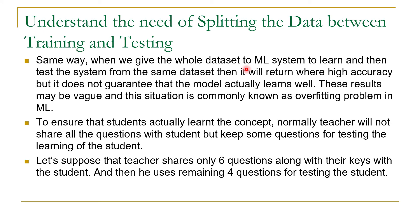In the same way, if we give the whole dataset to a machine learning system to learn and then test the system on the same dataset, it will return very high accuracy but it does not guarantee that the model actually learned well. So the result may be vague, and this situation is commonly known as the overfitting problem in machine learning. In order to solve this problem and test the learning in a proper way, we should use a different strategy.